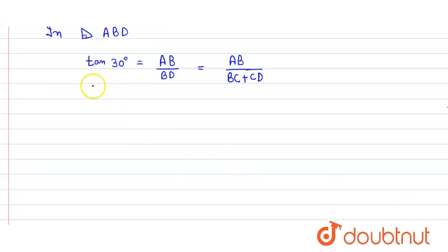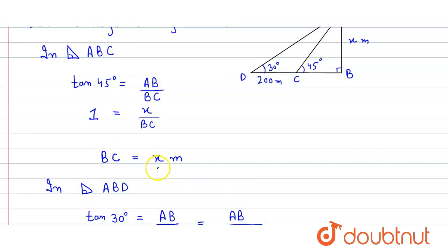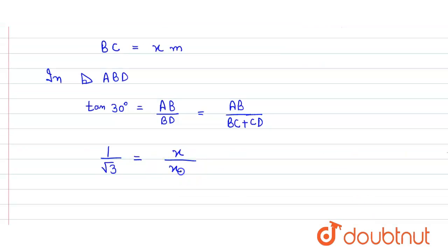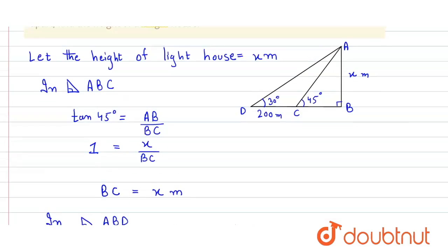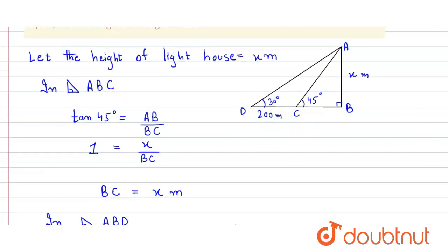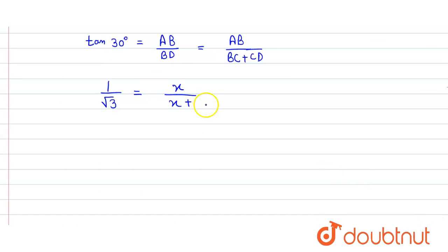We put the value of tan(30°) = 1/√3, so 1/√3 = x divided by the value of BC, which we found to be x meters, plus the value of CD which is 200 meters. So we get 1/√3 = x divided by (x + 200).